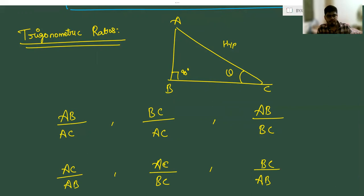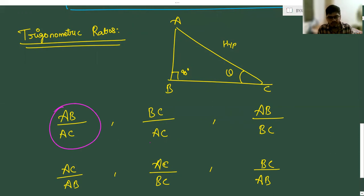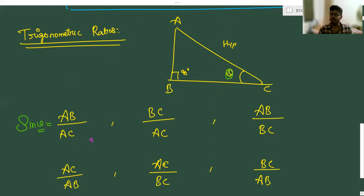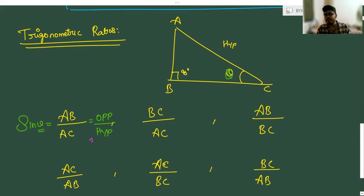We need to name these ratios. I am going to take the ratio AB by AC as sine theta. Here, AB is the opposite side of theta and AC is the hypotenuse. So the formula is: sine theta equals opposite side divided by hypotenuse.